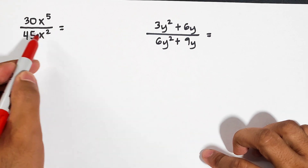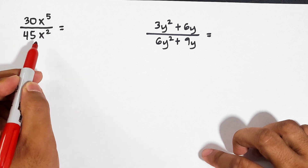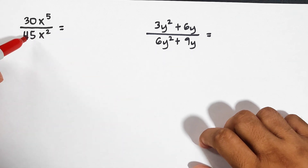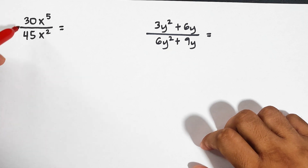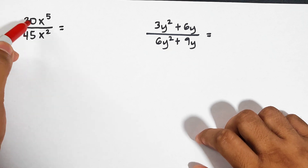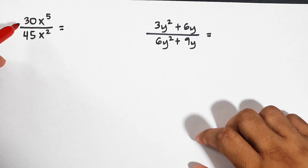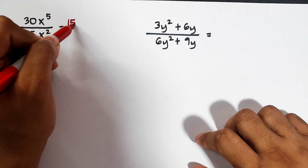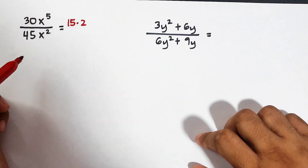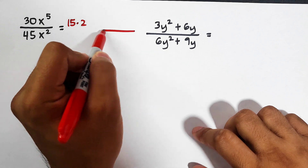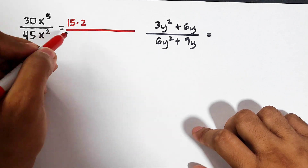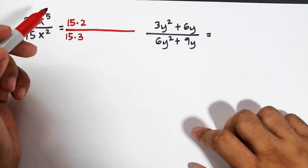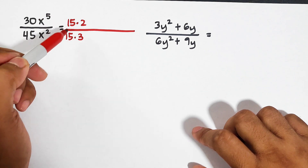As you can see, we have the numbers or the fraction 30 over 45, which is the first thing we need to simplify. We need to factor it out like this: 30 can be factored as 15 times 2, and 45 can be factored as 15 times 3. We can eliminate 15 over 15.